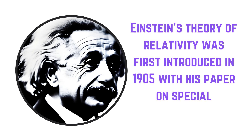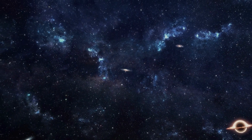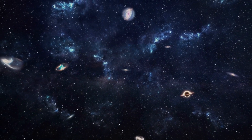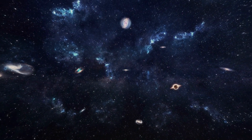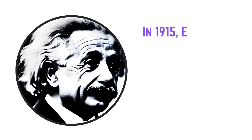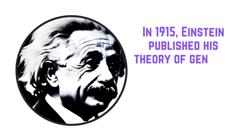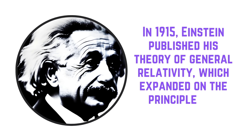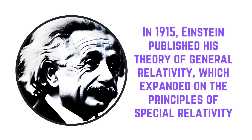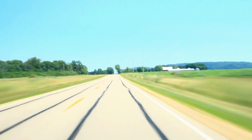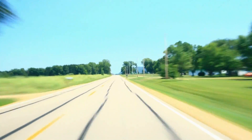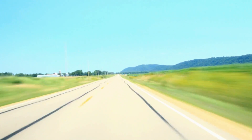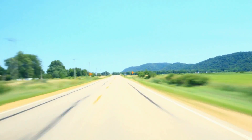Einstein's theory of relativity was first introduced in 1905 with his paper on special relativity, which presented the idea that the laws of physics are the same for all observers in uniform motion relative to one another. In 1915, Einstein published his theory of general relativity, which expanded on the principles of special relativity and explained the nature of gravity. Since then, the principles of relativity have been applied in various fields of science and technology, from astrophysics to particle physics to engineering.